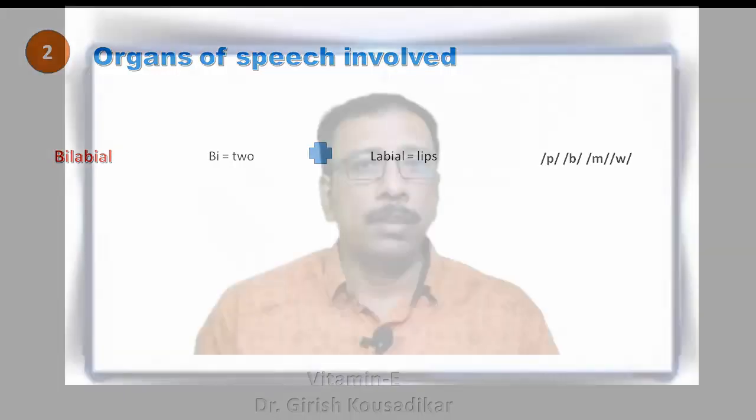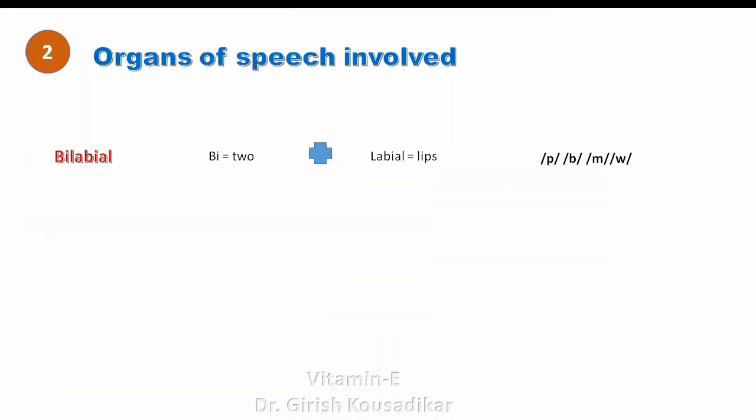In bilabial sounds like /p/, /b/, /w/, and /m/, the lower lip touches the upper lip to make these sounds. All those productions of sounds that take place with the help of the lower lip and upper lip are bilabial sounds. Now we will see the next place of articulation: alveolar, also known as the teeth ridge.